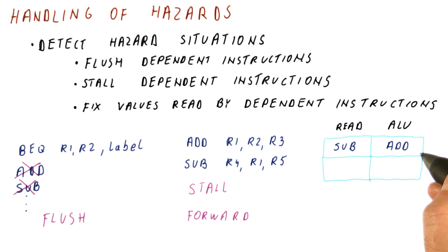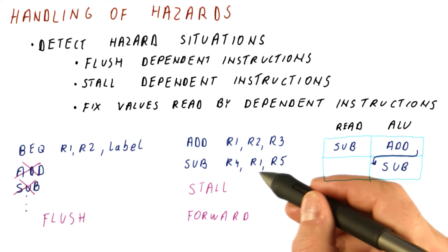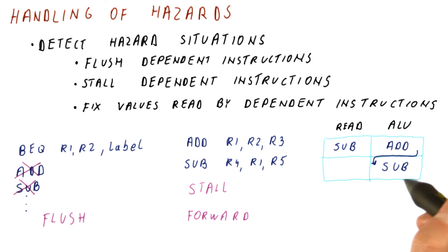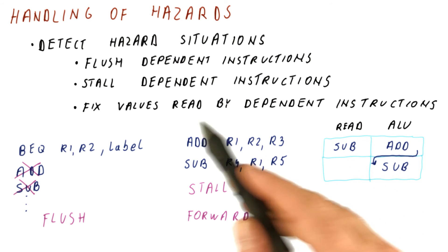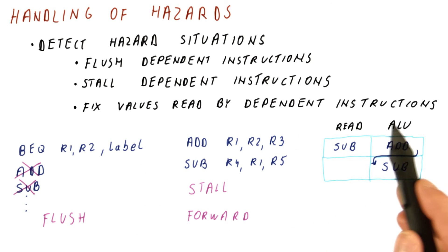What we can do is at the beginning of the following cycle, subtract can get the value that the add produced and that value replaces the value that we read from R1 so that subtract computes with the correct value. If the value exists somewhere in the pipeline at the point before we actually use the value to compute, we can fix what we have read so that we still compute with the right value. This is called forwarding, and it amounts to fixing the values read by dependent instructions.